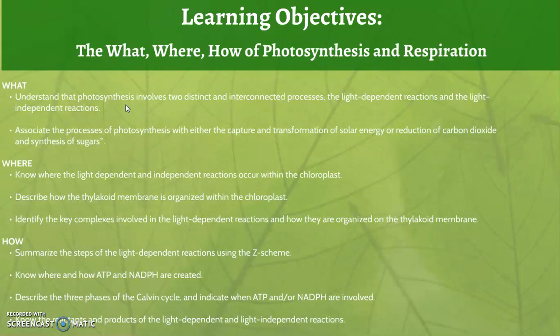We'll look at where this is occurring, from the whole plant all the way down to the molecular level, and then we'll look at how it's happening. When we look at how it's happening, I really like to rely on the Z scheme, which looks at the energy state of electrons moving through this process.